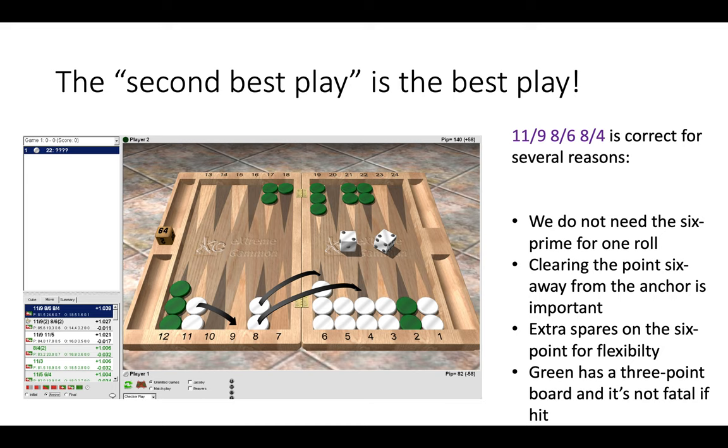So why is this move correct? Well, firstly, we do not need the six-prime because we're only going to have to break the six-prime the roll afterwards. So why make something for one go to then dismantle? Clearing the point six away from the anchor is also incredibly important so our sixes play better.